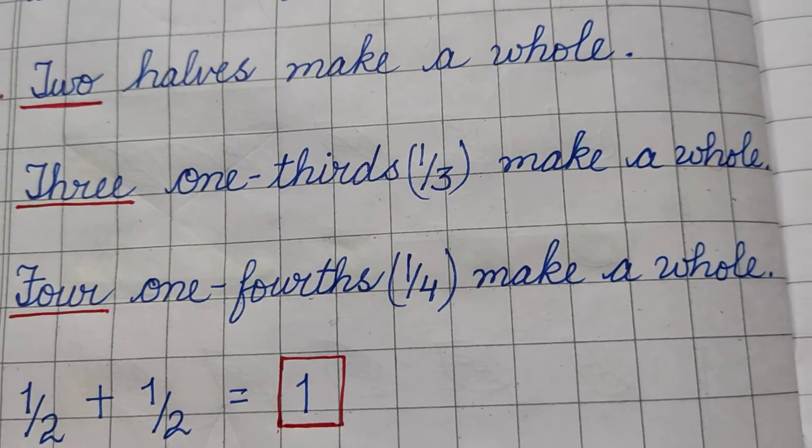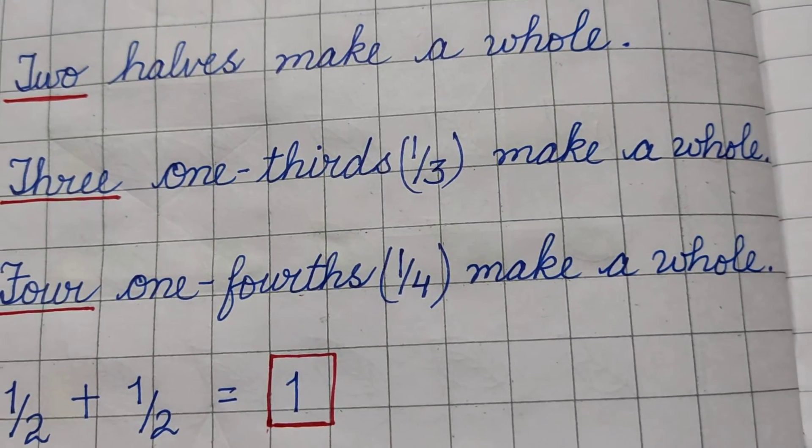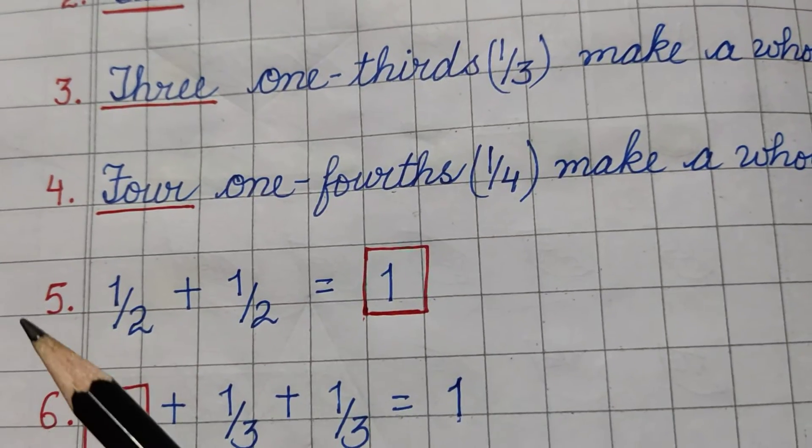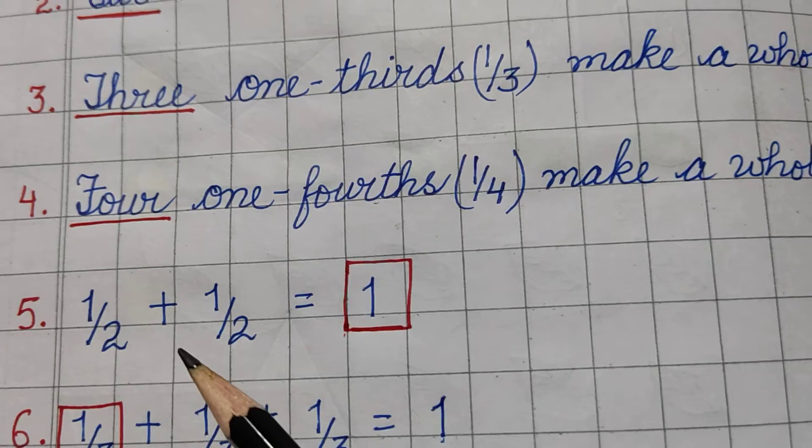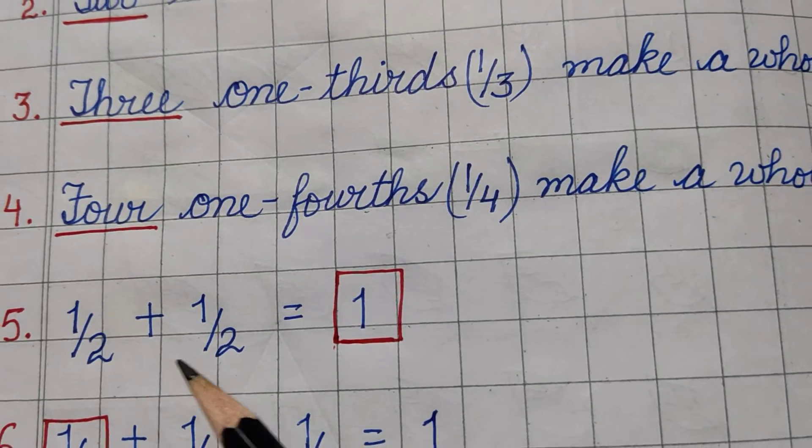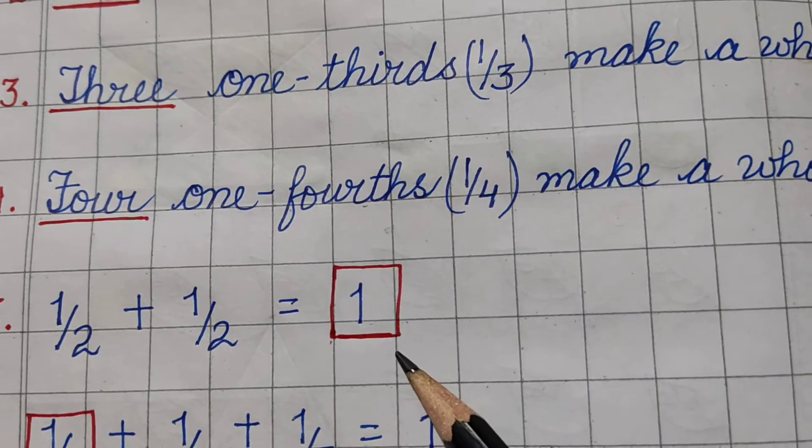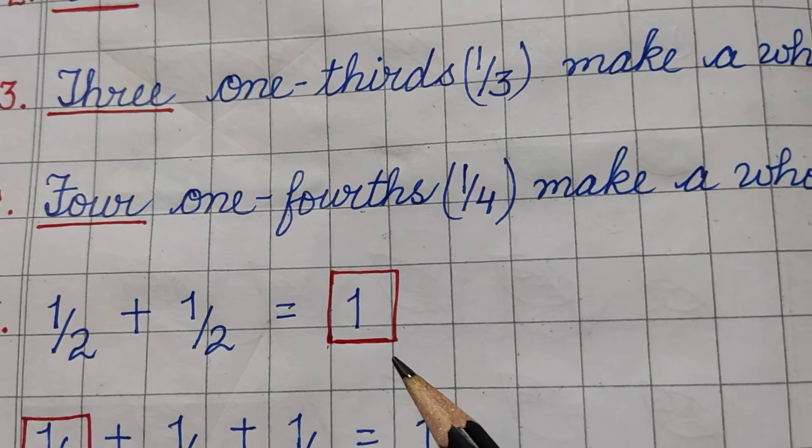Now the 5th one is 1 upon 2 plus 1 upon 2. 1 upon 2 is half. Half plus half is equal to 1, two halves make a complete 1.